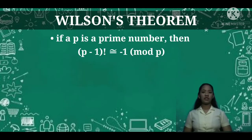Wilson's theorem states that if p is a prime number, then (p-1)! is congruent to -1 (mod p).